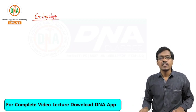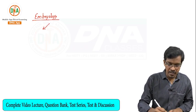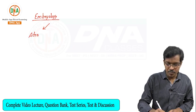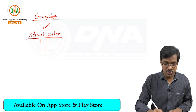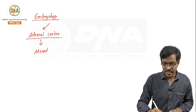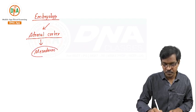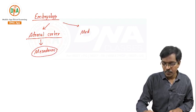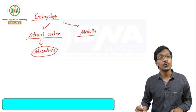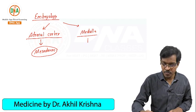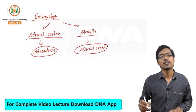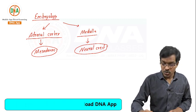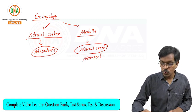The adrenal gland has an adrenal cortex and adrenal medulla. The embryological origin of the adrenal cortex is from mesoderm — the adrenal cortex develops from mesoderm. The adrenal medulla is derived from neural crest, also called neuroectoderm. So the adrenal cortex develops from mesoderm and the adrenal medulla is a neural crest derivative.